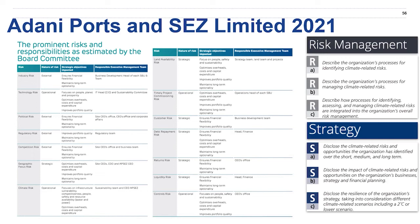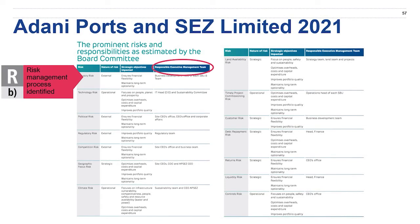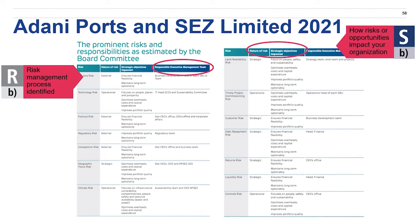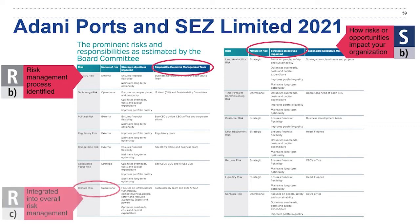Let's look at a few things you might have found here. First, they put right at the top the responsible member of the executive management team, so this looks at the risk management process. Another area they've highlighted is how risks or opportunities impact the organization — they've listed the nature of their risk as well as the strategic objective impacted by that risk. They also give a column on the left-hand side for the risk itself and the nature of that risk. Climate change is just one of many, so here they've integrated climate into their overall risk management portfolio.